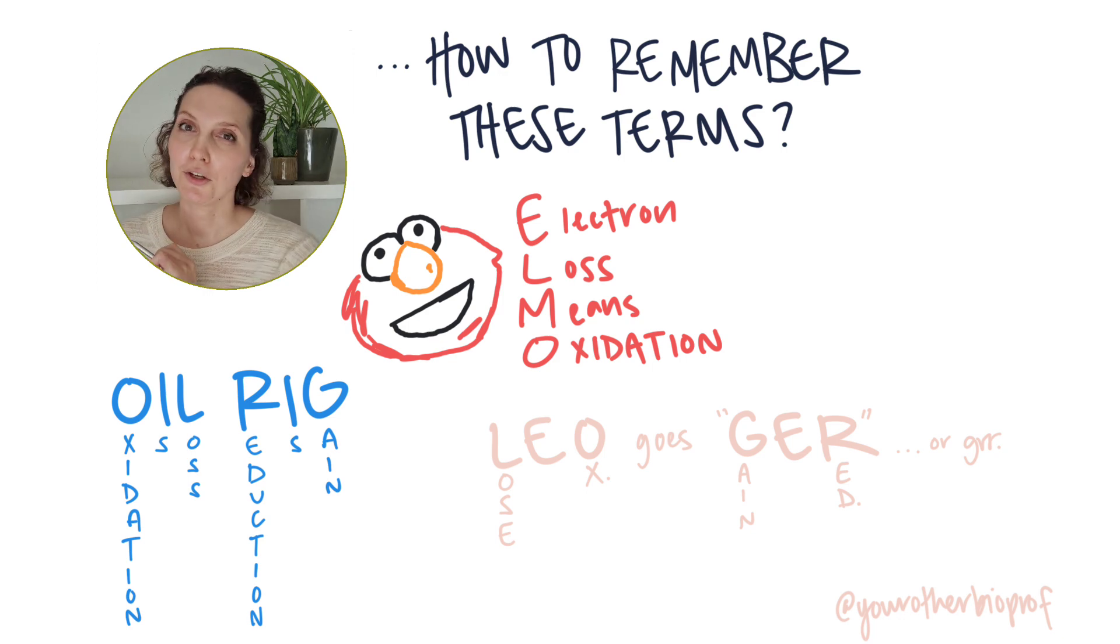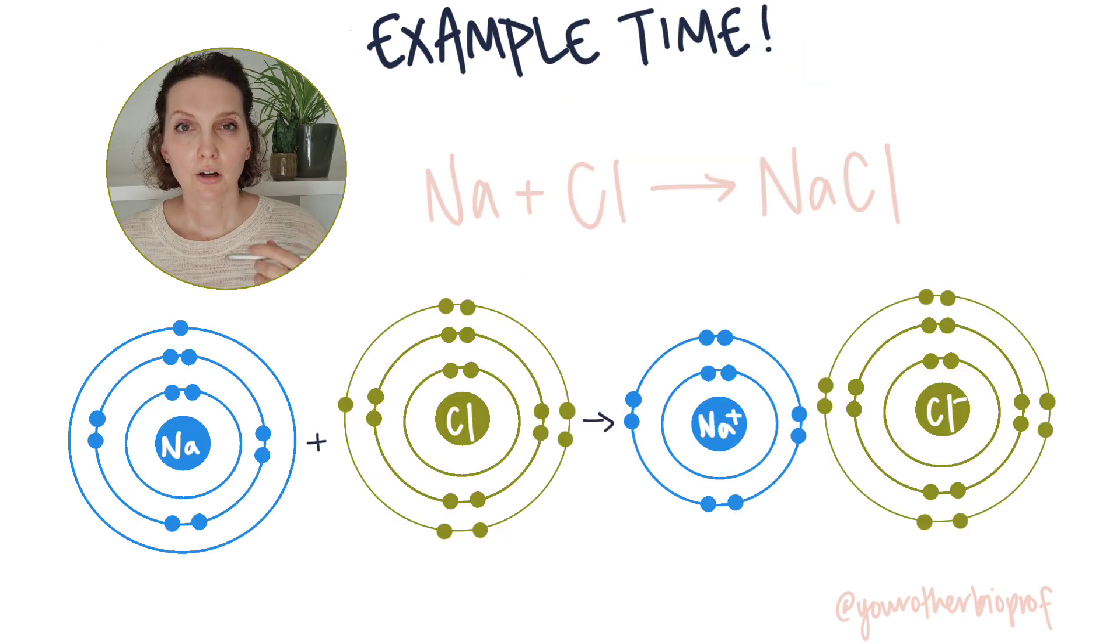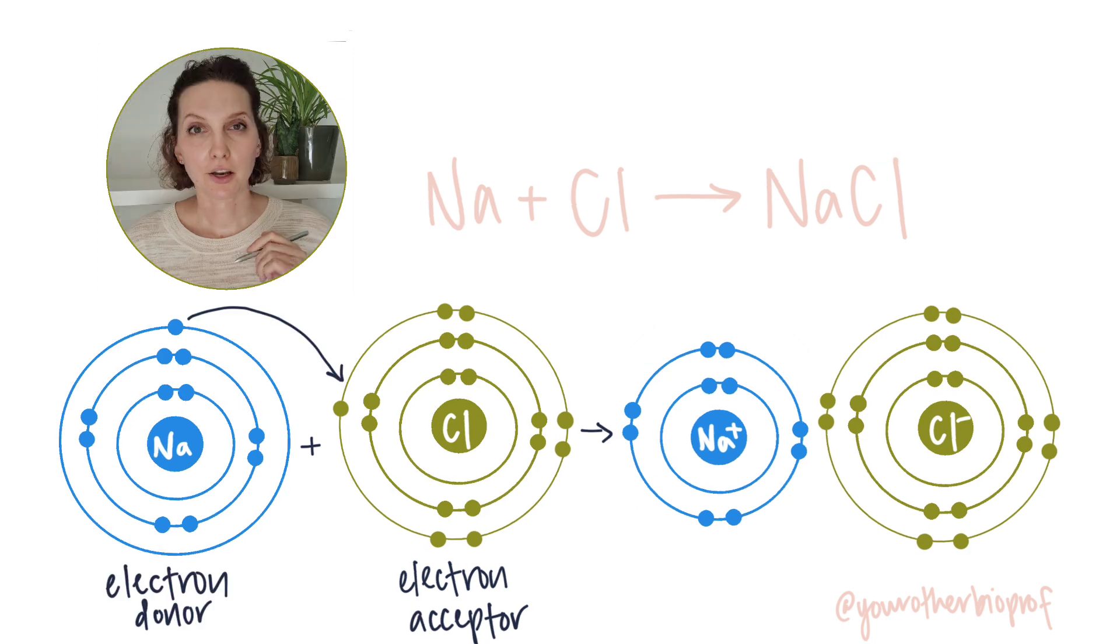So pick your favorite. And if you know another, drop that in the comments. Here, which ion is the electron donor? Sodium, right? It's going to give up an electron to our electron acceptor, chlorine.